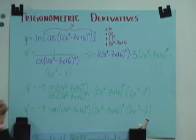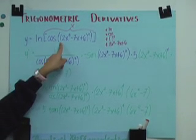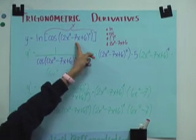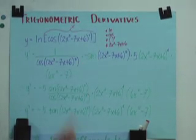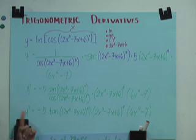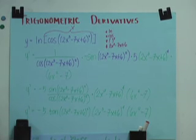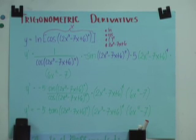My example is y equals ln of cosine of (2x³ - 7x + 6) to the 5th. We have at least four terms: ln, cosine, the parenthesis to the 5th, and 2x³ - 7x + 6, which I will find the derivative for using chain rule.